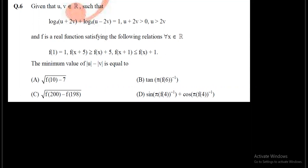So what is the question? The question says that given u and v belong to the reals such that log(u + 2v) base 4 plus log(u − 2v) base 4 equals 1. Further, u + 2v > 0 and u > 2v. From this inequality we can interpret that u > −2v, and combining both conditions we conclude that u > |2v|.